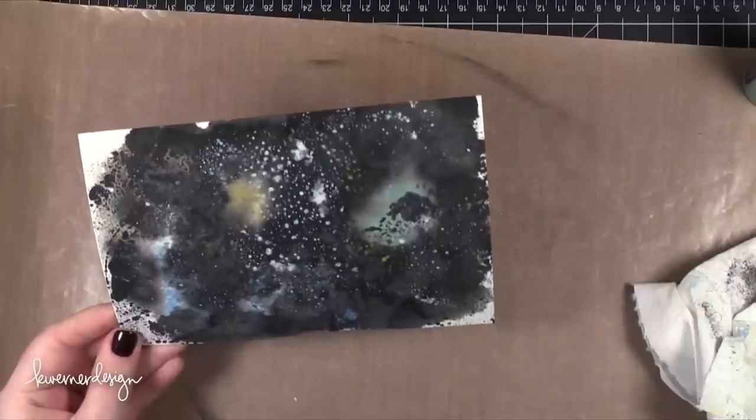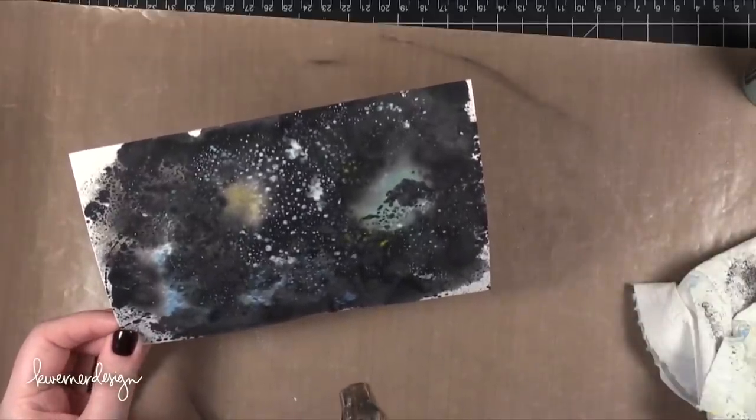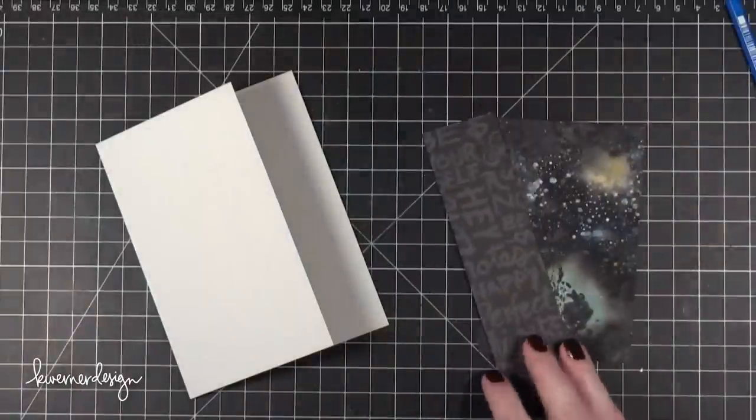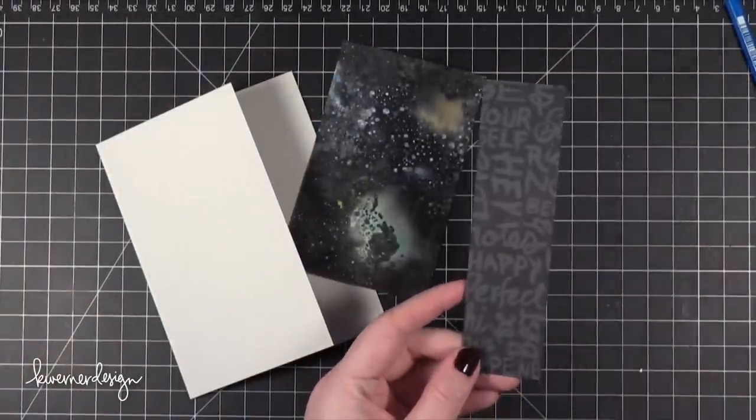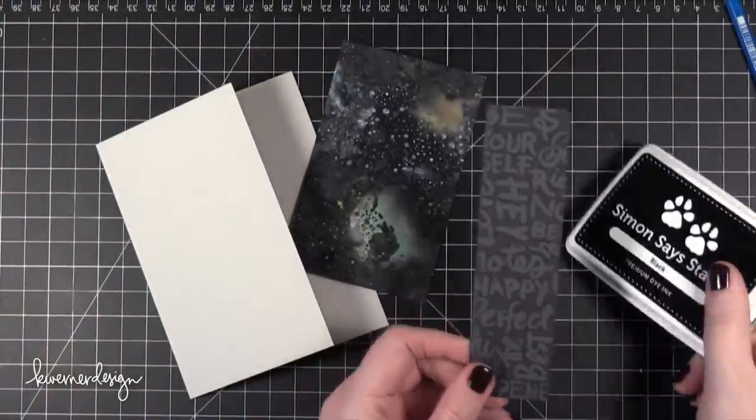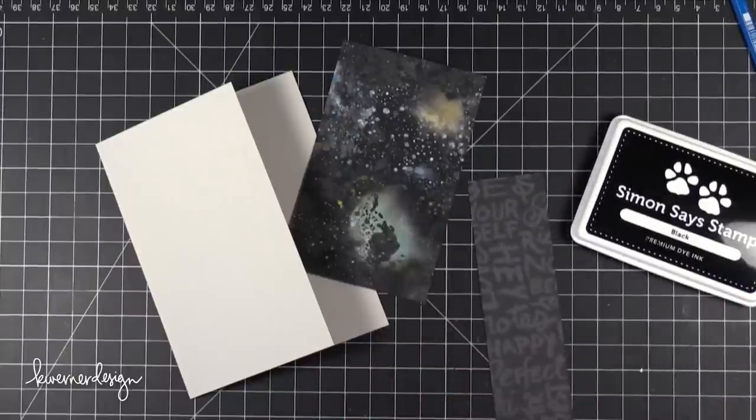For the base of the card I used some fog cardstock from Simon Says Stamp. I cut off the front of the card. I cut off about an inch, maybe an inch off the front.